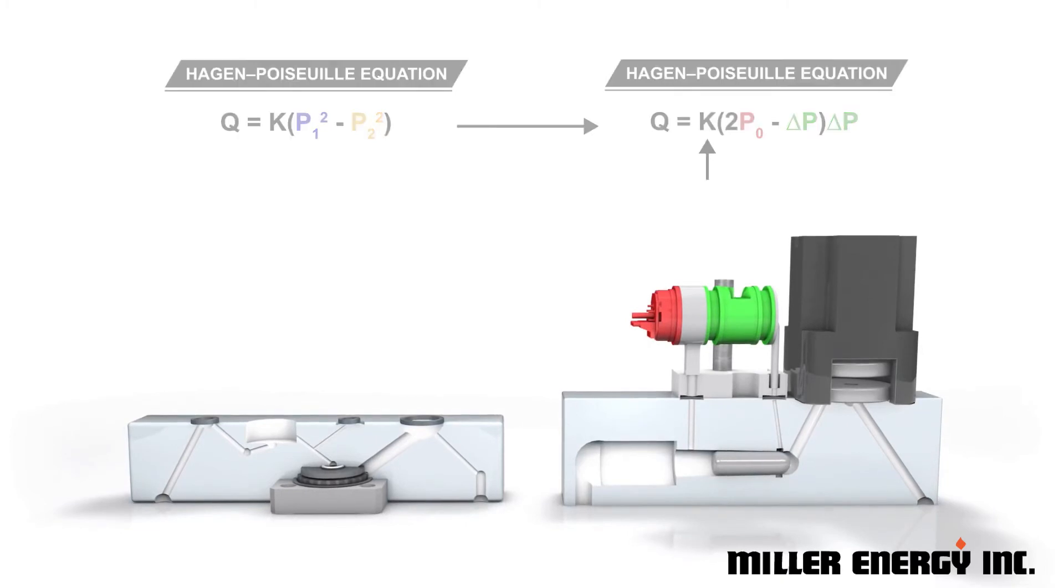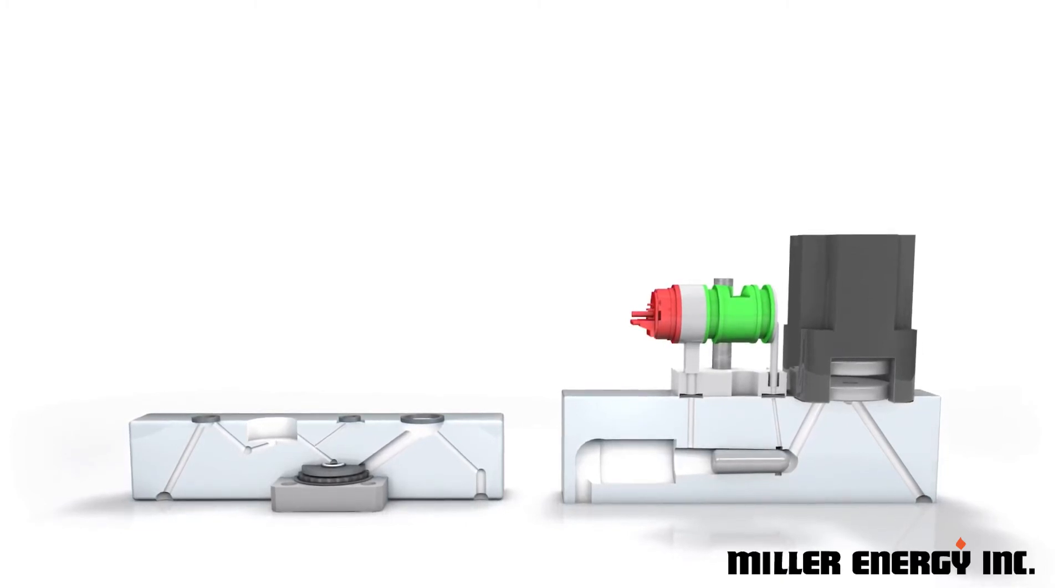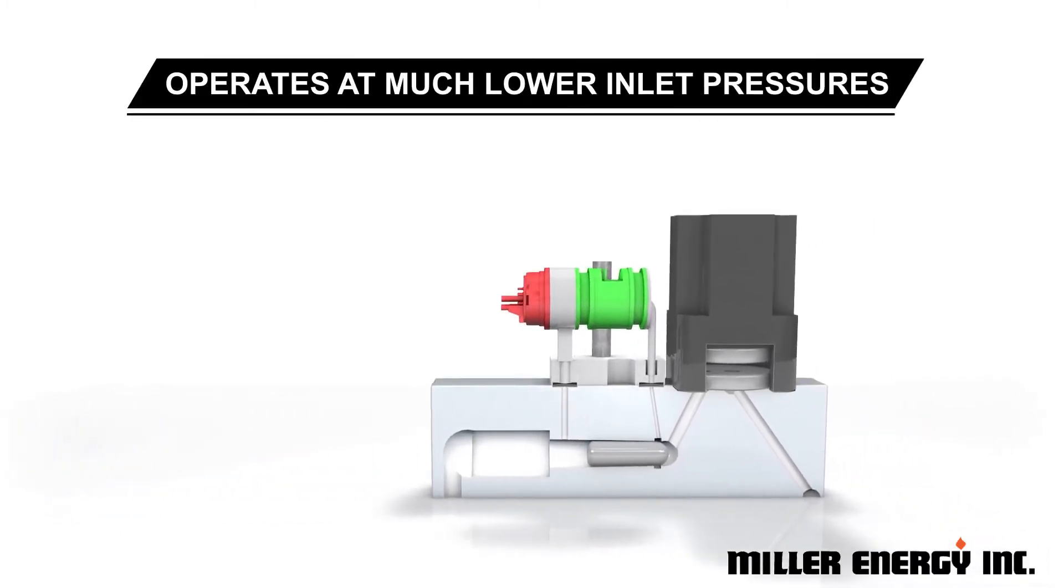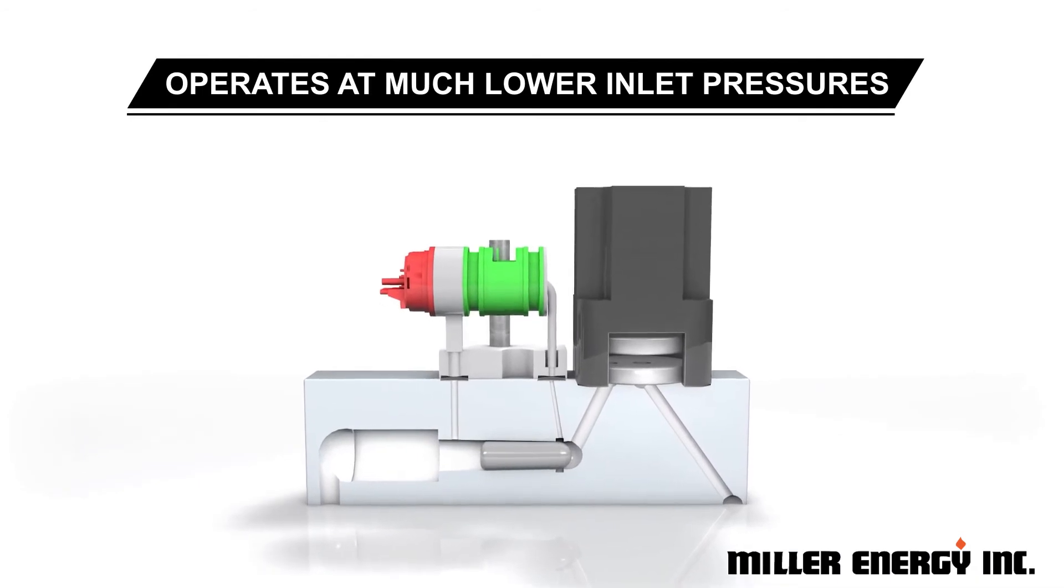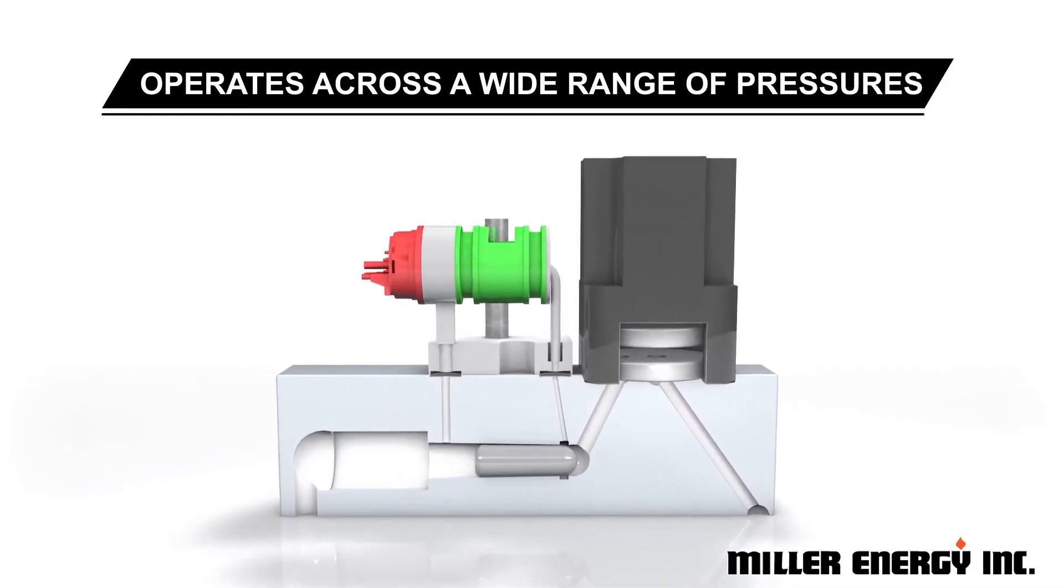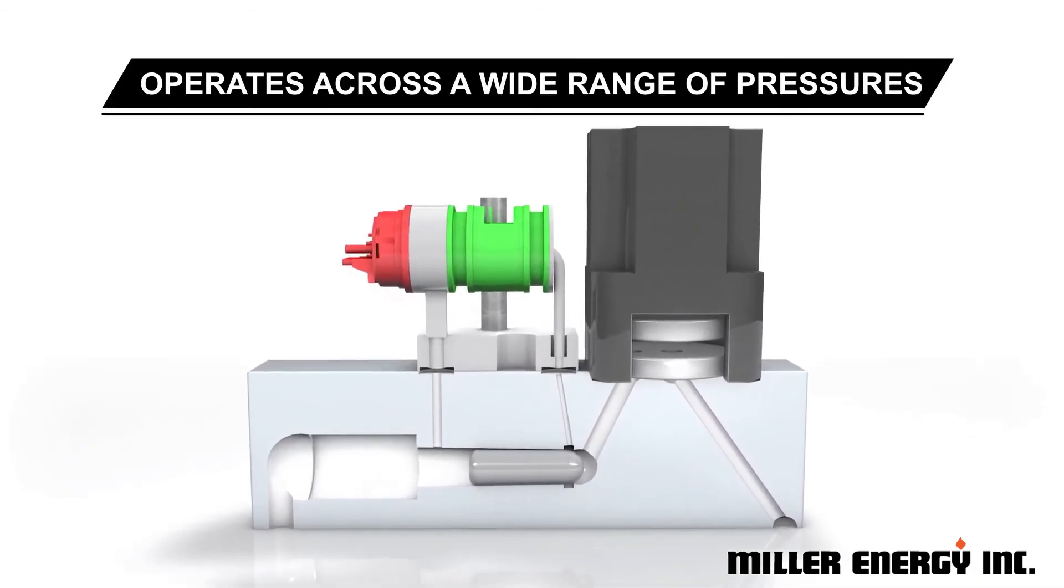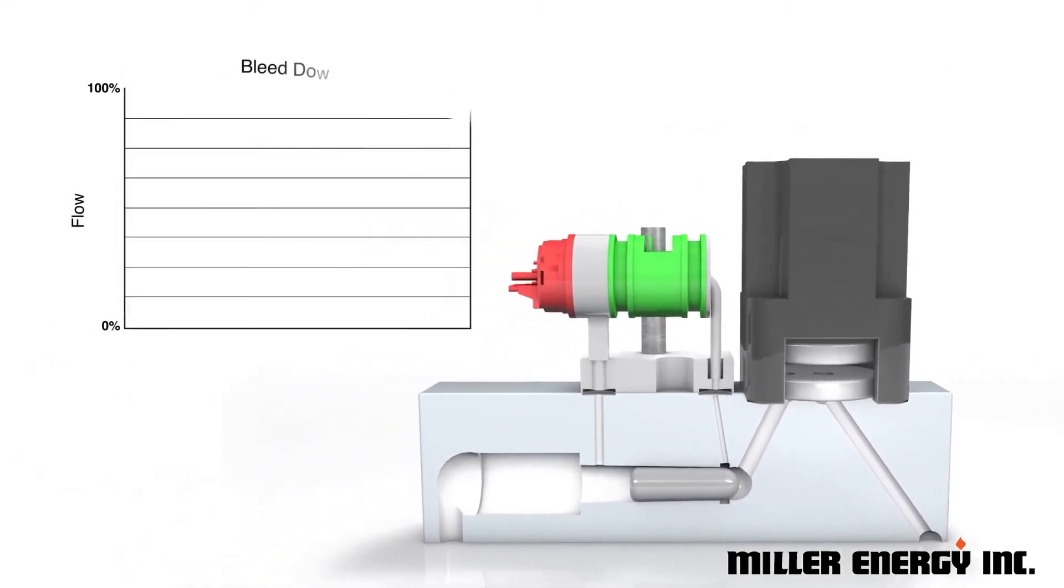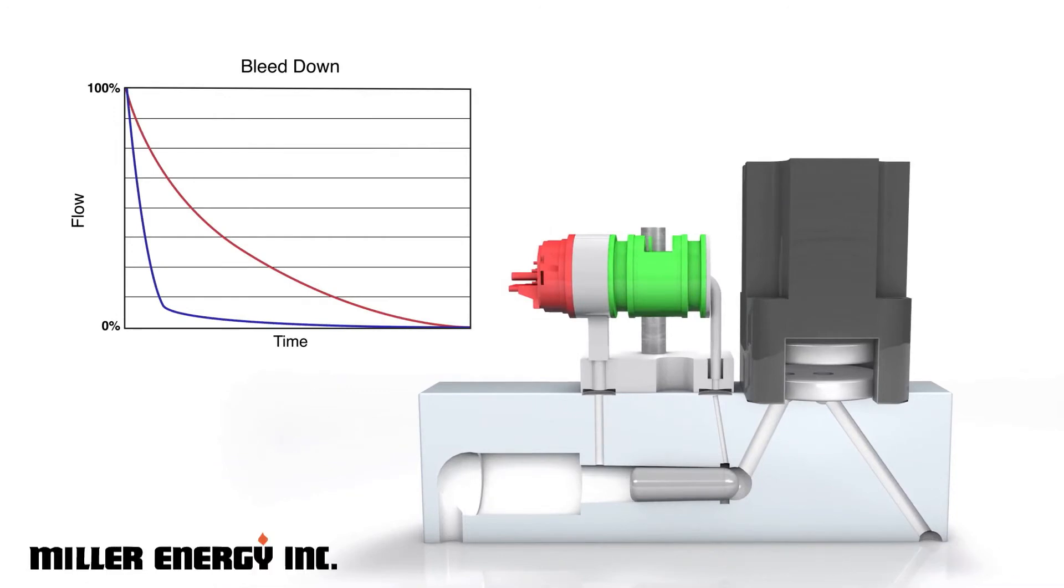Combined with the downstream valve architecture, this enables the GP200 to operate at much lower inlet pressures and across a wider range than other pressure-based MFCs. The downstream valve also removes the bleed-down effect and ensures the device is insensitive to dynamic outlet conditions.